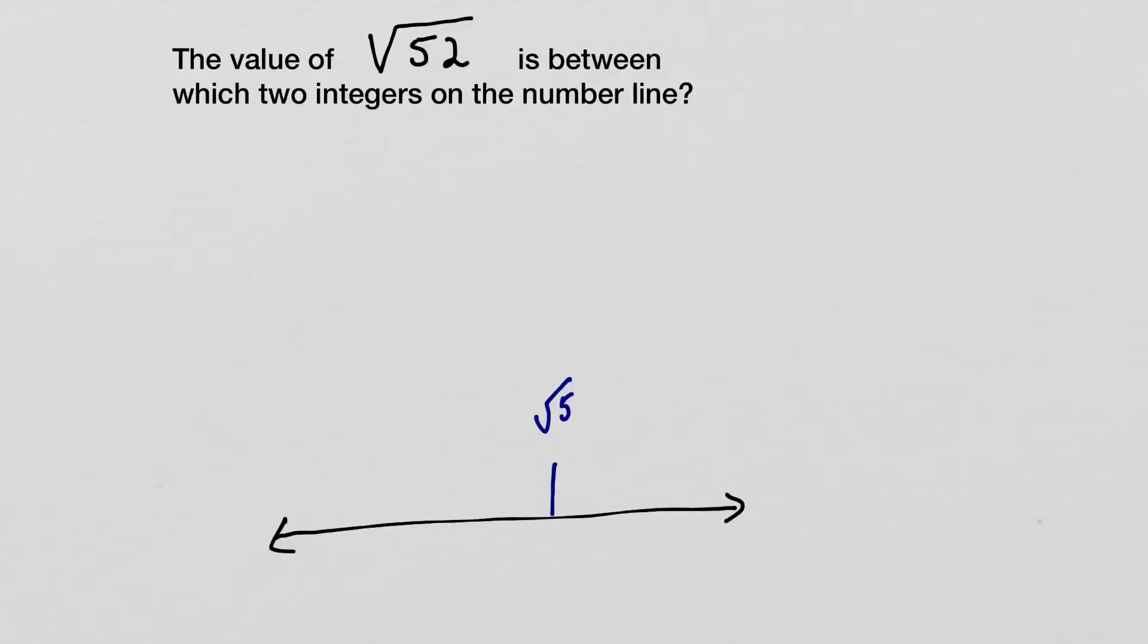So I'm going to start off by just writing it on a blank number line right here. I don't know where that falls yet, and I won't write in the numbers just quite yet. So I need to find out what two integers are going to go between the square root of 52.